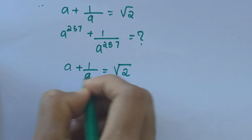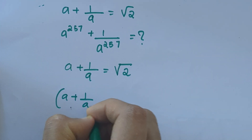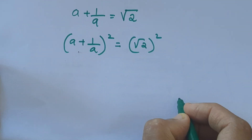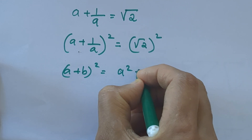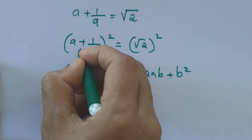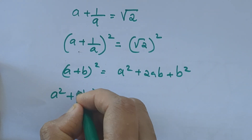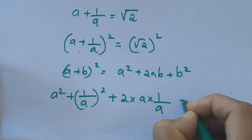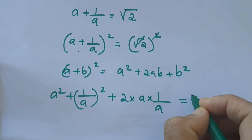So we can square on both sides. That gives us (a + 1/a)² = (√2)². We know (a + b)² = a² + 2ab + b², so we get a² + 1/a² + 2 × a × (1/a) = 2, since (√2)² = 2.